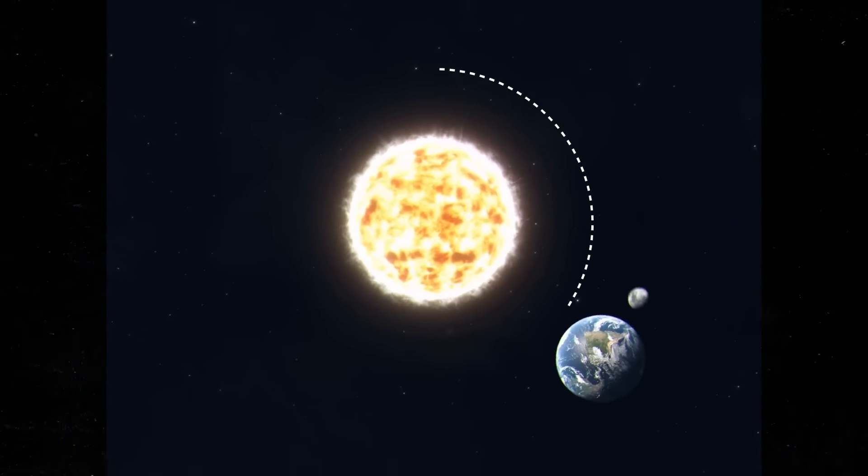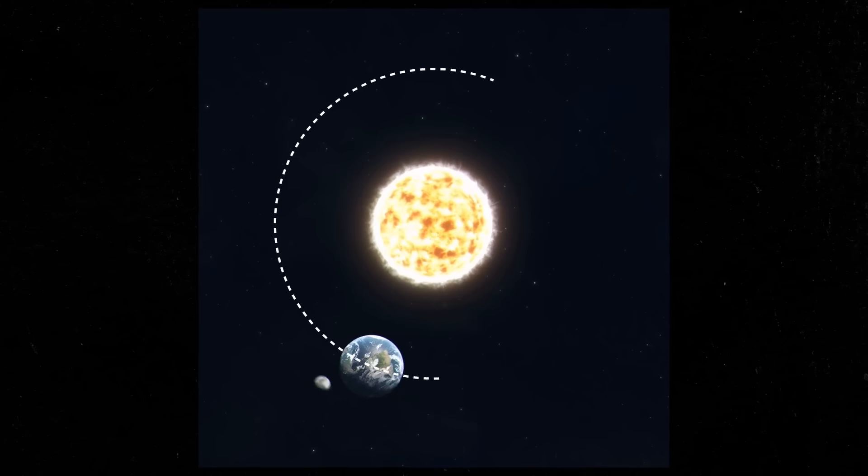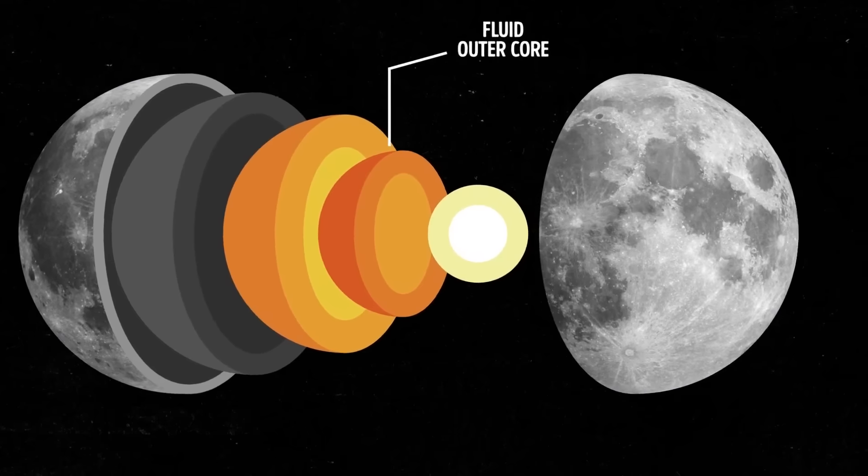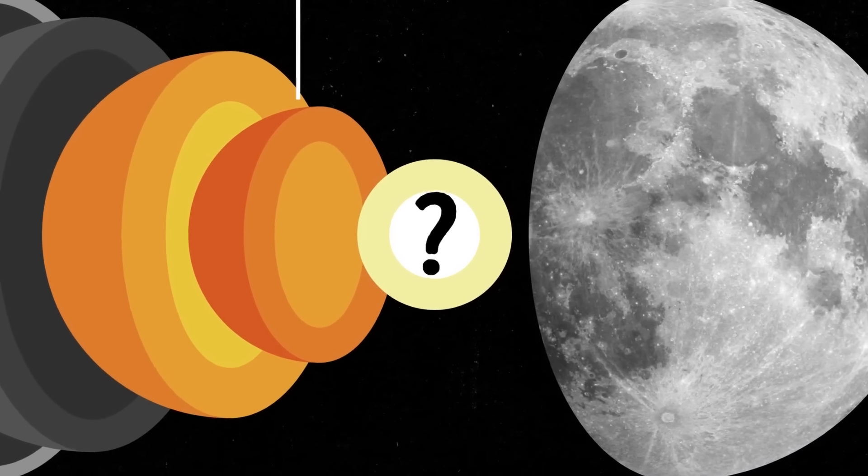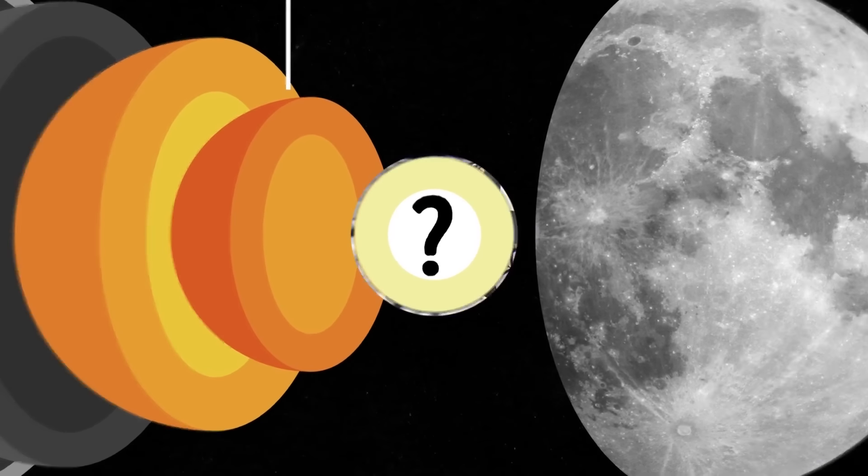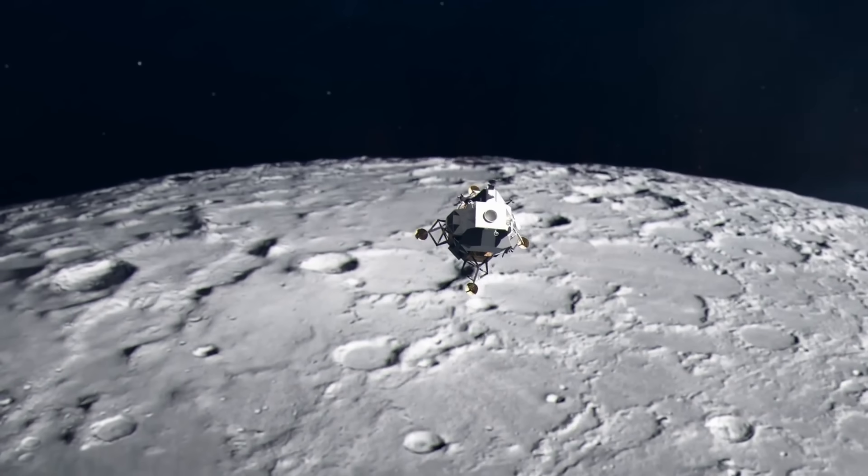About 20 years ago, scientists were observing how the moon rotates. Using that data, they concluded that it had a fluid outer core. But the inner core was hard to study, so they didn't know if it was solid like a rock or molten like a hot liquid. But things are clearer now.